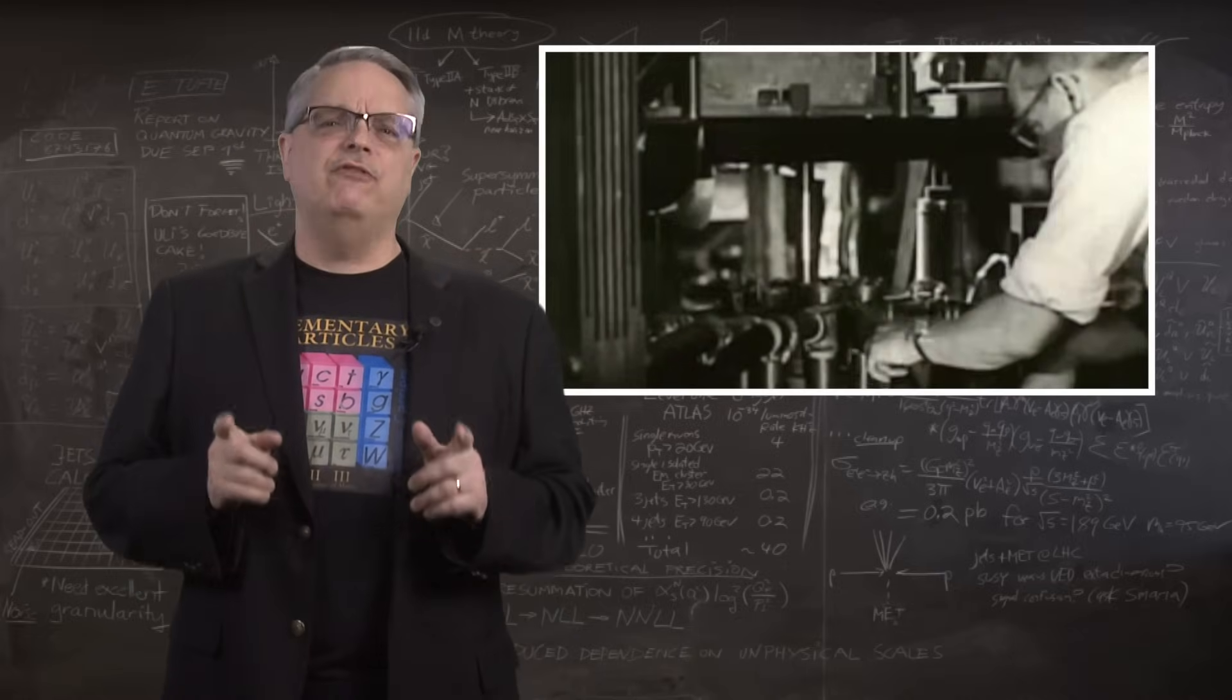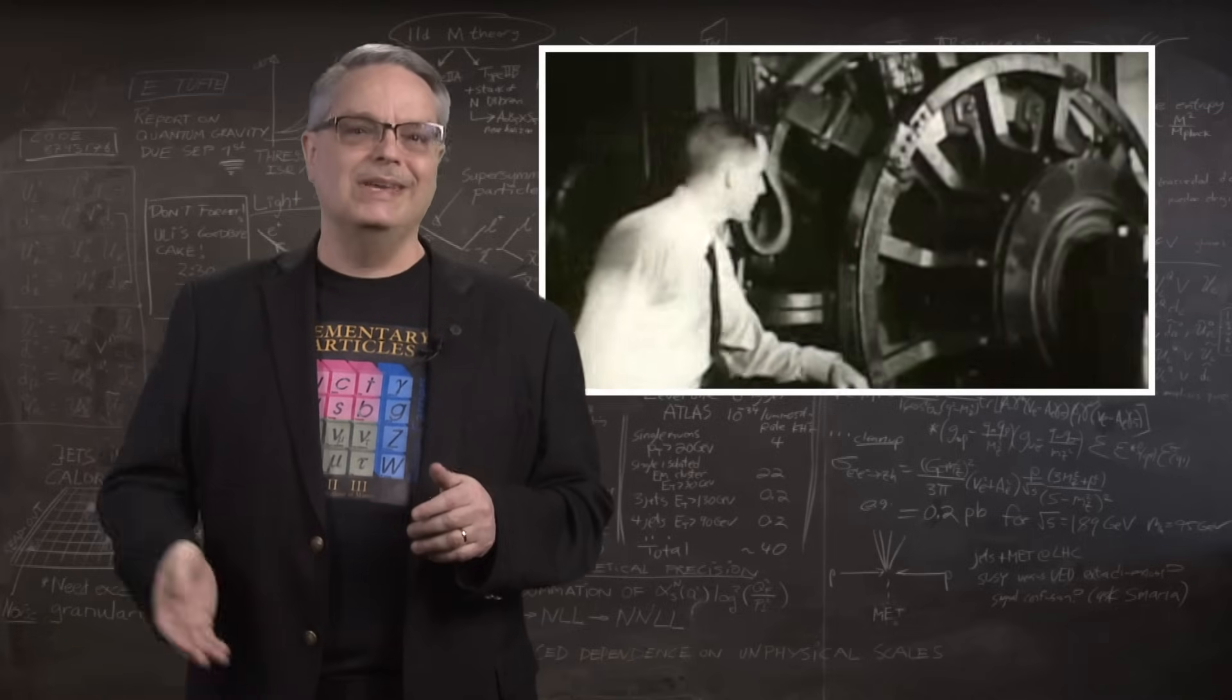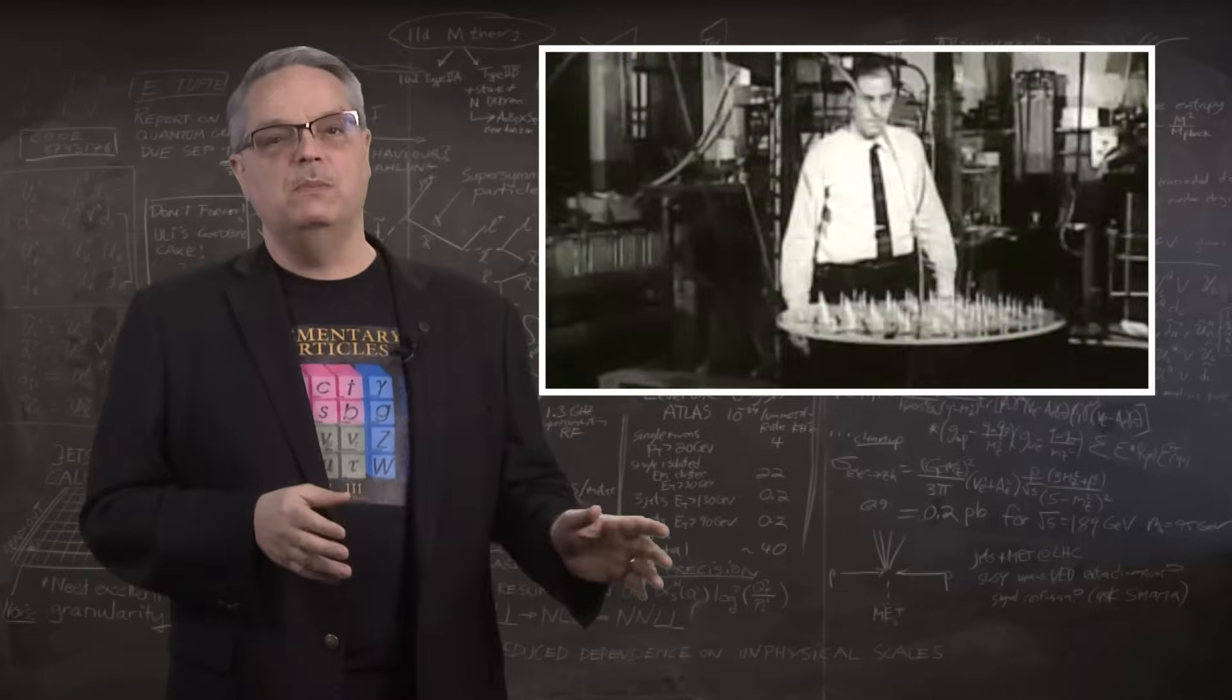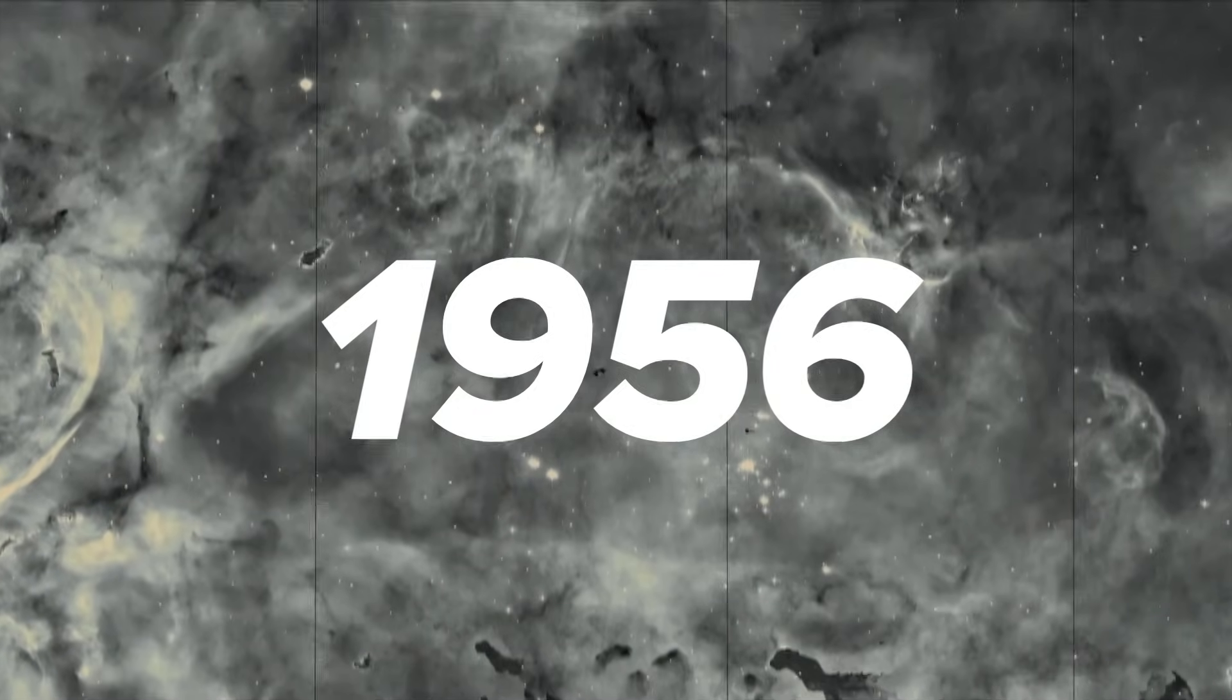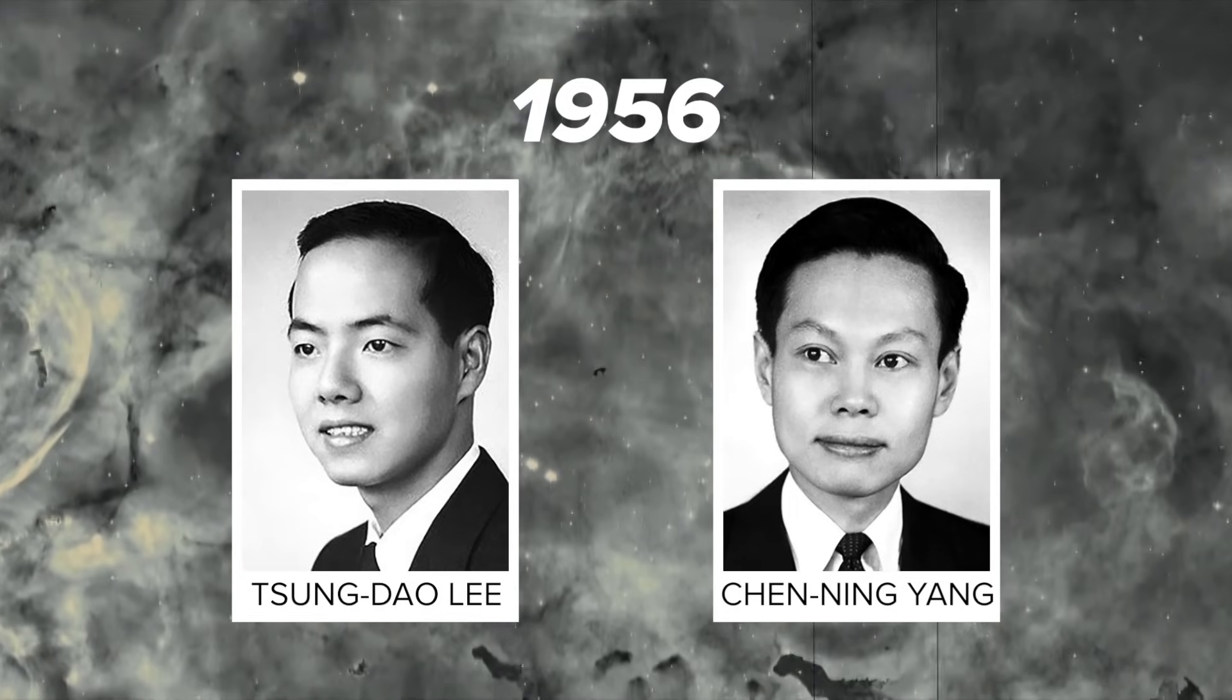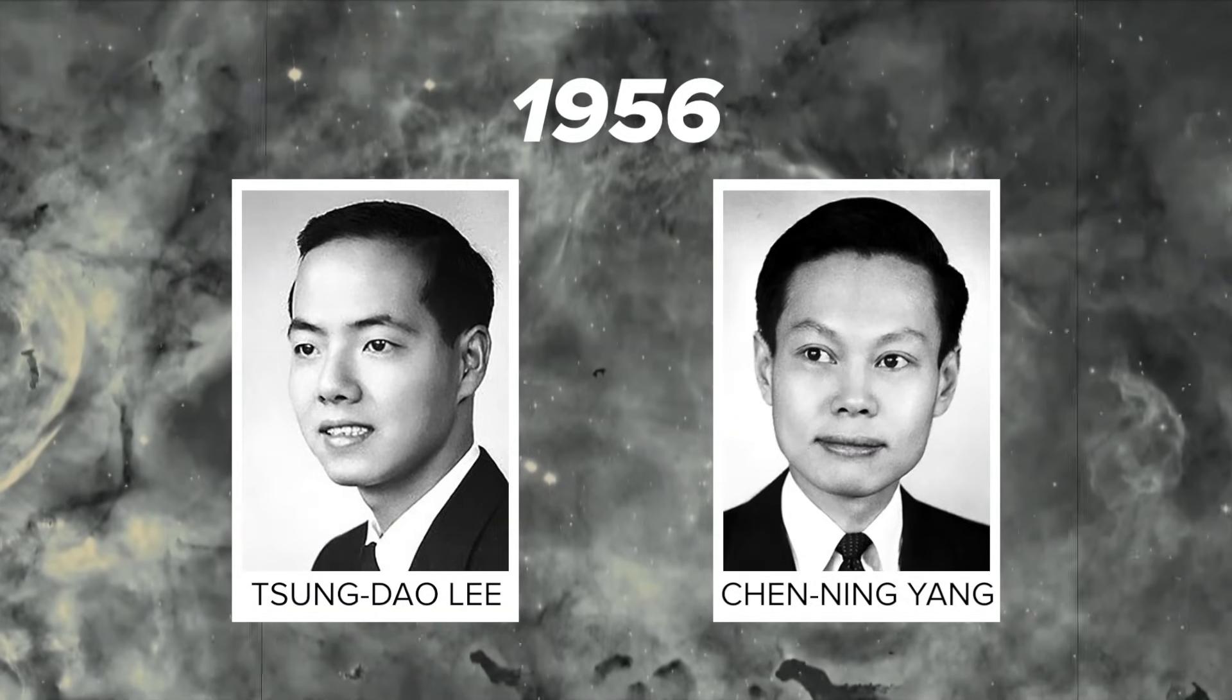So in the 1950s, scientists had tested interactions using both the strong force and electromagnetism, and had shown that neither of them cared a hill of beans about the direction of the spin of the particles involved. However, in 1956, two Chinese theoretical physicists, Tsung-Dao Lee and Chen-Ning Yang dug through the literature and found that nobody had tested whether the weak force cared.